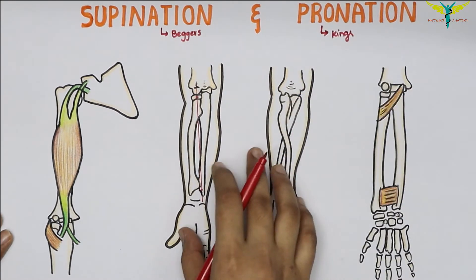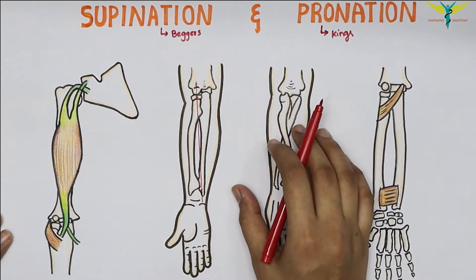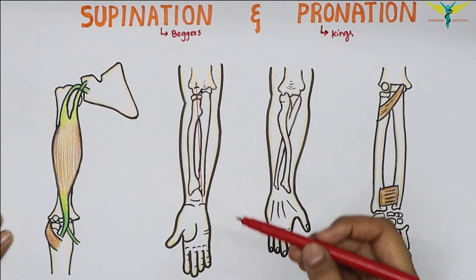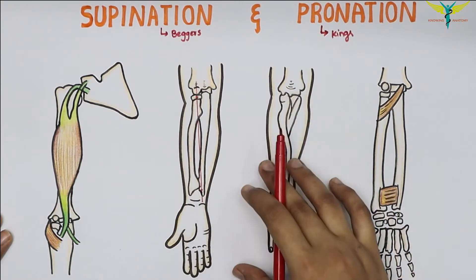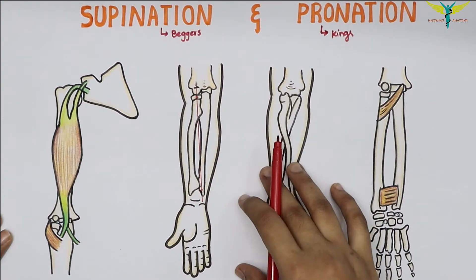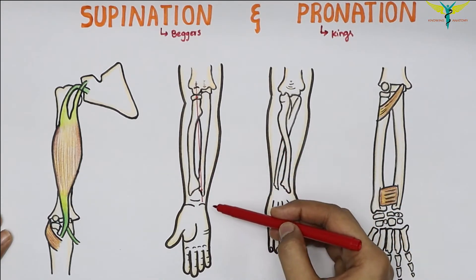Supination and pronation are the rotatory movements of the forearm which occur at the superior and inferior radioulnar joints around a vertical axis.